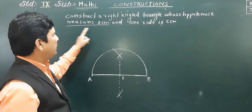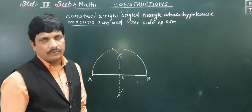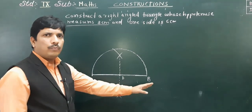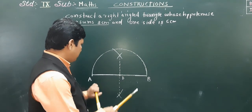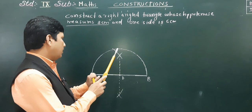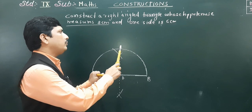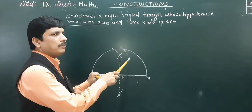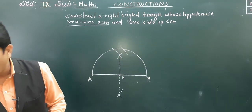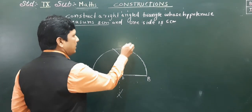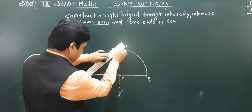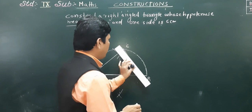One side of 6 centimeters is given. From point A, we are going to take 6 centimeters distance. It will intersect the semicircle at a point on the circumference — that is our required point. We will call this point C. Now we join C to A and C to B.